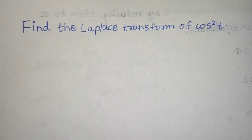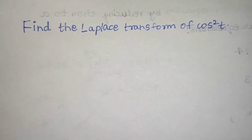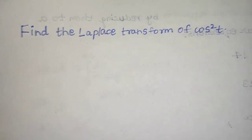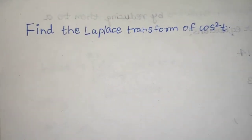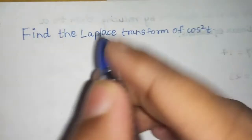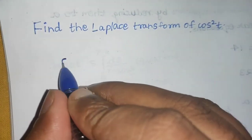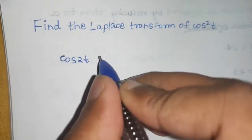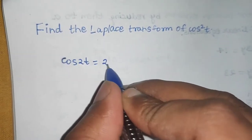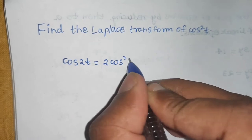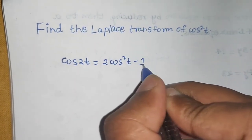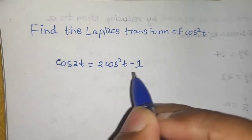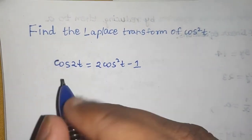A question from Laplace transform: we need to find the Laplace transform of cos²(t). Using the basic idea of trigonometry, we know that cos(2t) written in terms of t is 2cos²(t) minus 1. We are concerned about cos²(t), so first take the 1 to the LHS.